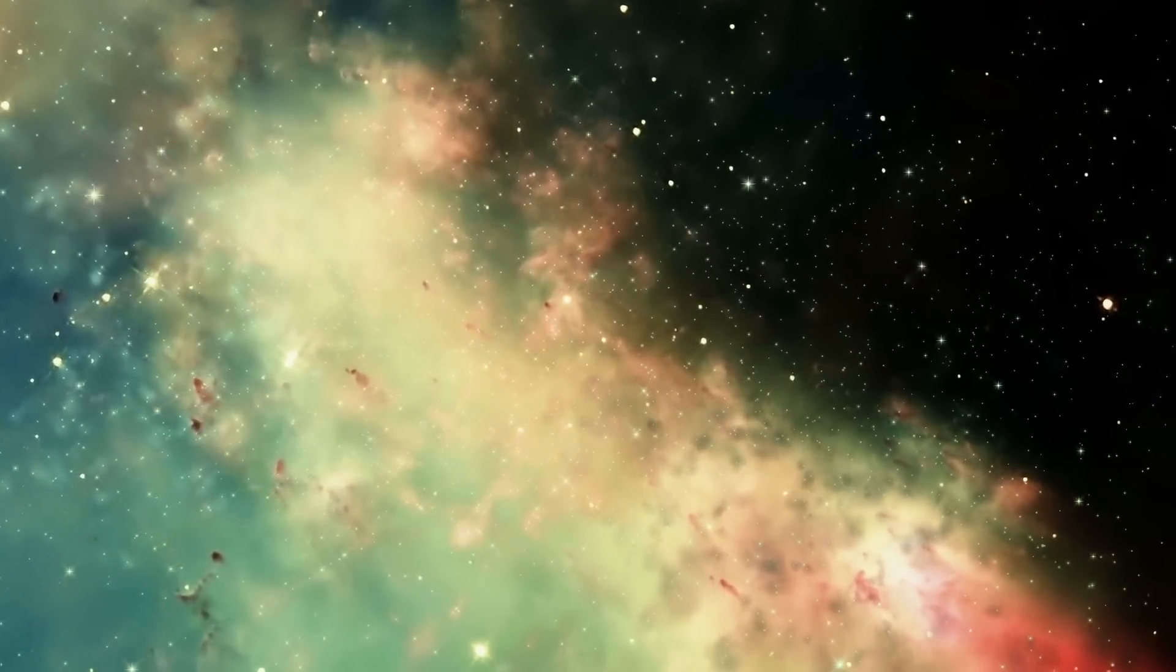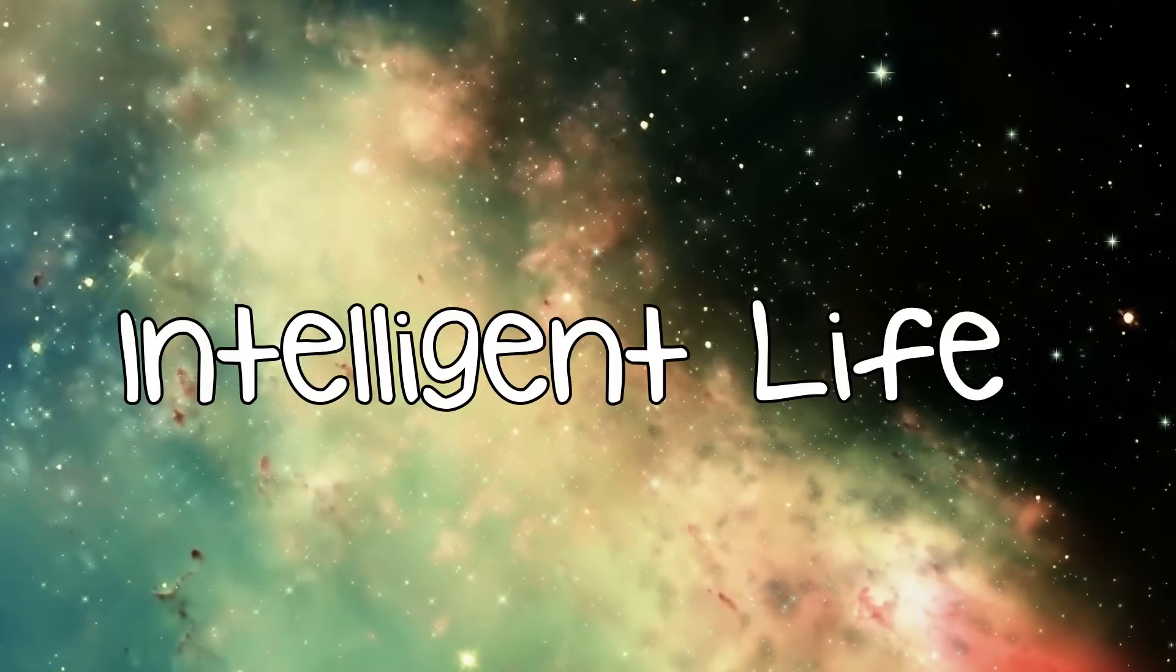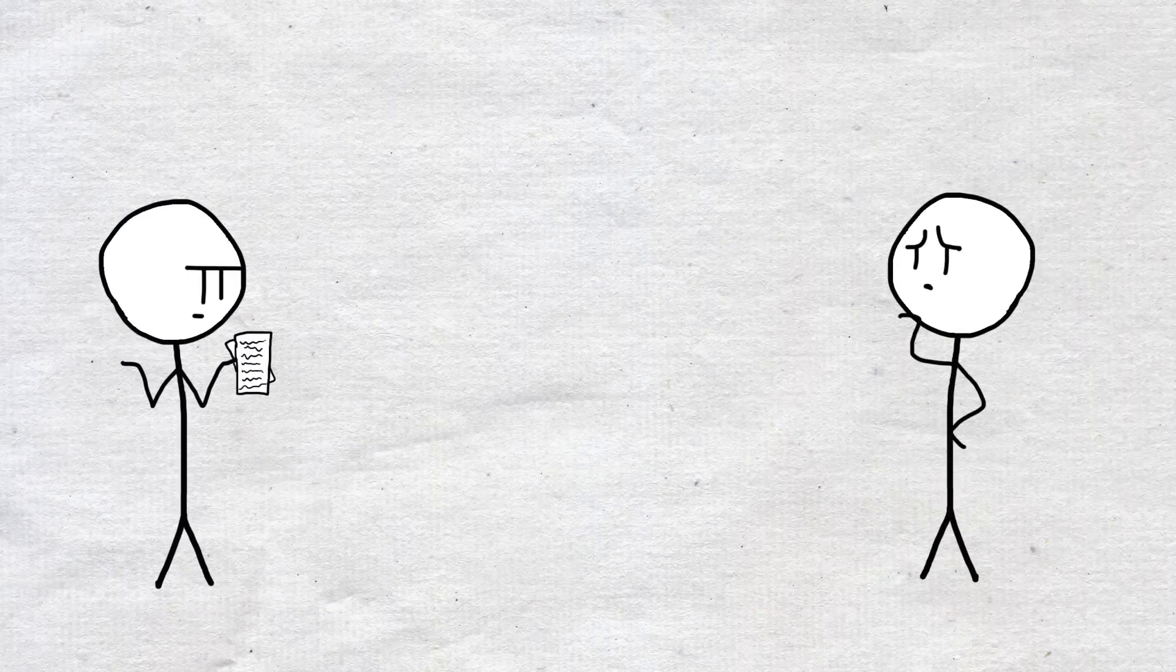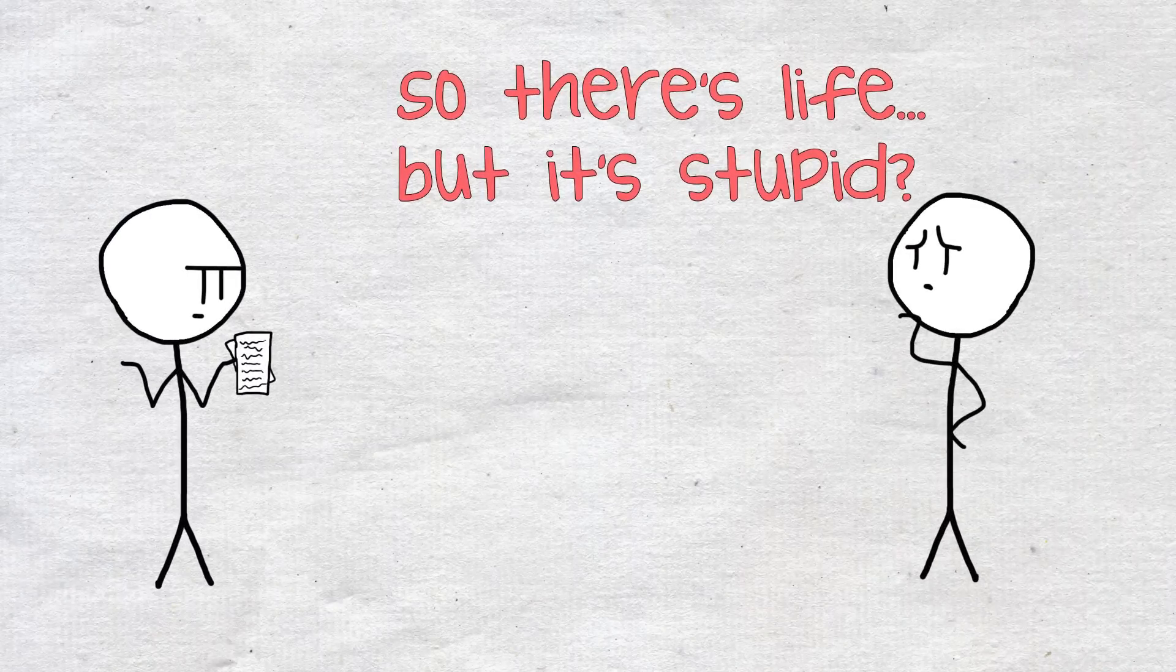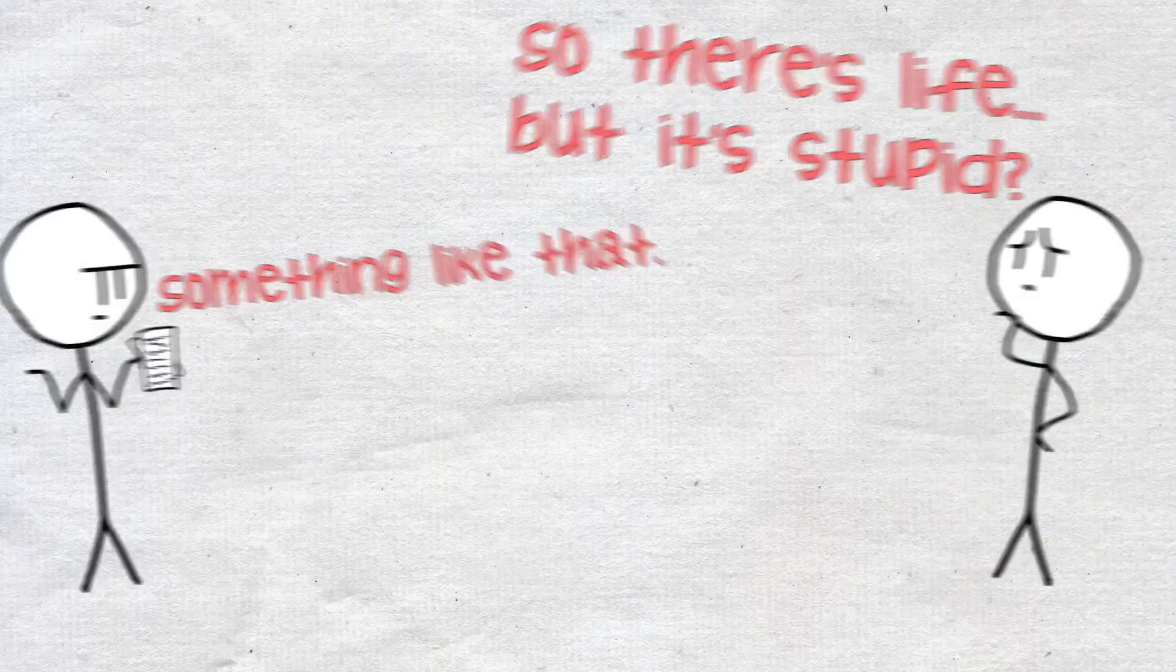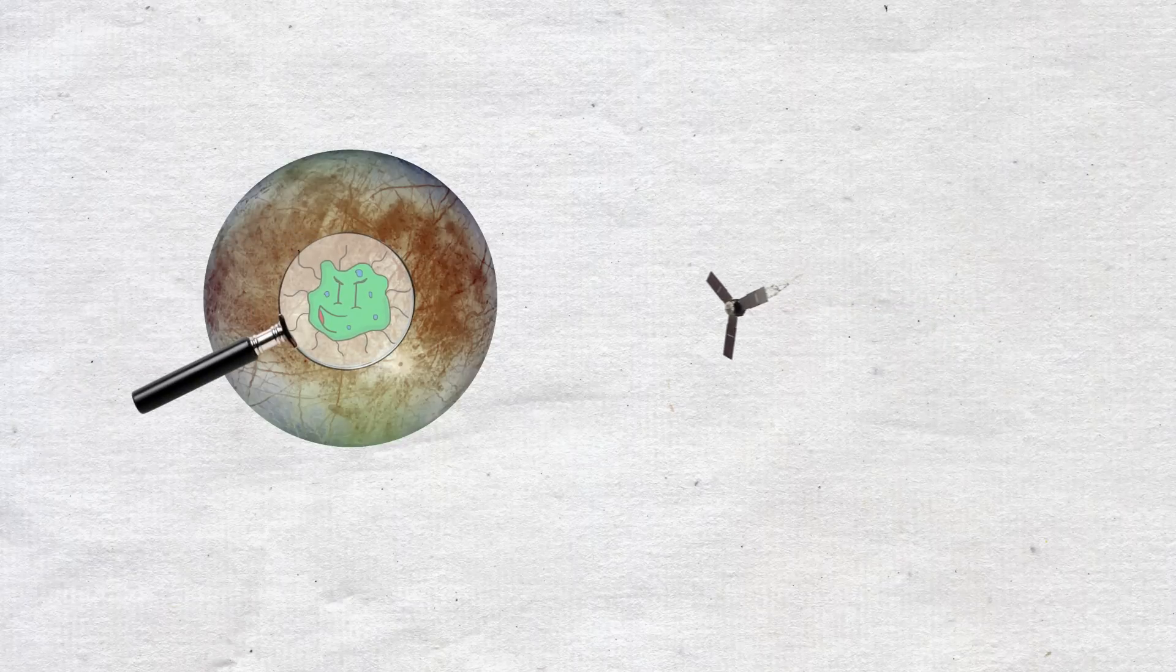So far we've been working under the assumption that we are the only life in the universe at all, but what if we specified that we were the only intelligent life? How would that change the scenario? Well, if we assume again that humanity has a way to determine that there is no intelligent life in the universe, then not much will change initially. However, imagine a scenario in which a probe from earth discovers single-celled life on another planet, let's say Europa.